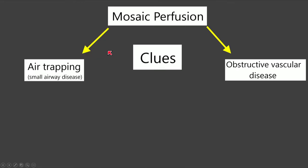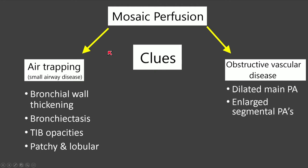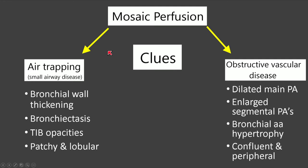In review, clues favoring air trapping as the cause of mosaic perfusion include airway findings such as bronchial wall thickening, bronchiectasis, tree-in-bud opacities, and a patchy lobular distribution. For obstructive vascular disease, we focus on the arteries: enlarged main and intraparenchymal pulmonary arteries, bronchial artery hypertrophy, and a more confluent and peripheral distribution.